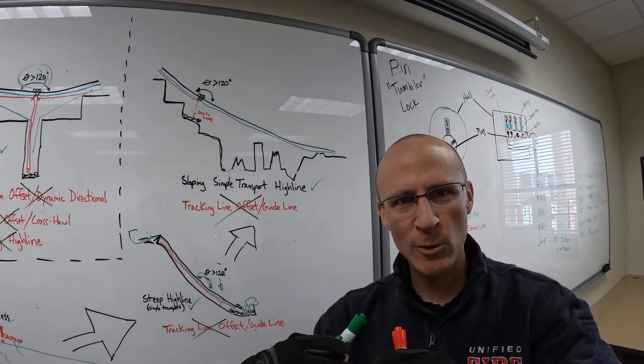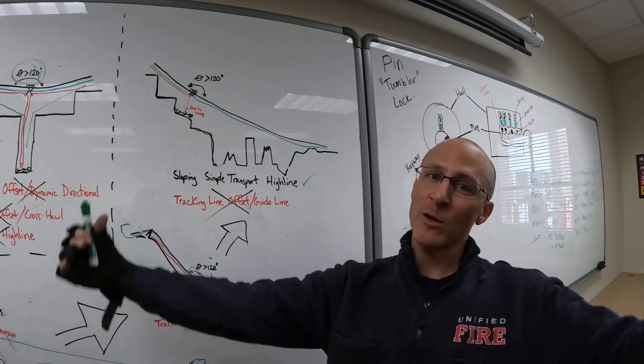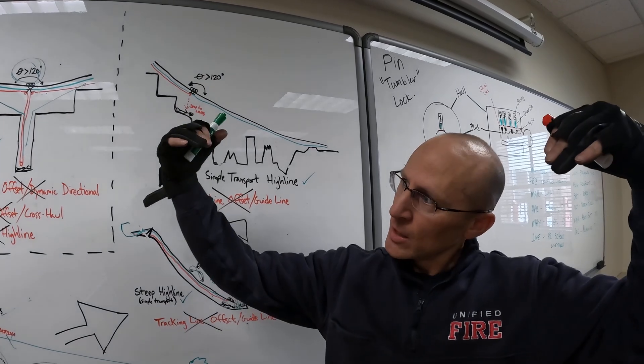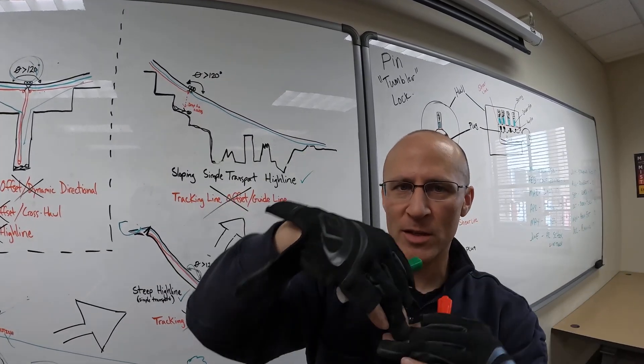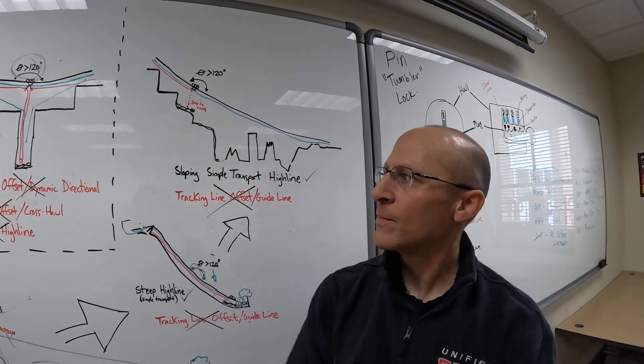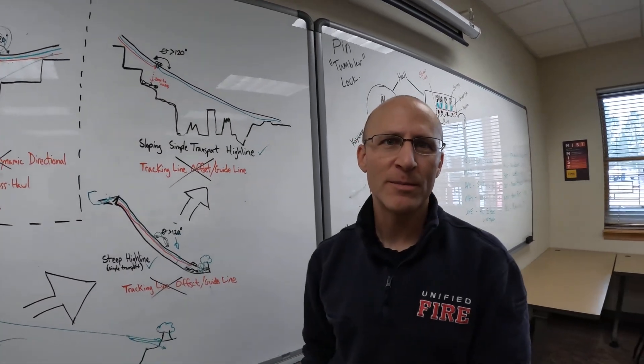Hopefully that clears the water when people talk about track lines versus tracking lines versus high lines versus offsets. The nomenclature of a two-rope offset is the same thing as a cross-haul. The nomenclature of a deflection offset is the same thing as a dynamic directional. There you go.